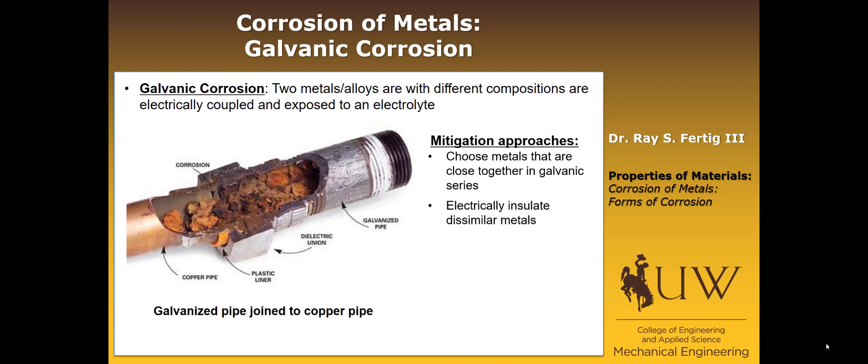We could also electrically insulate them so that they aren't able to form that galvanic couple, which is ultimately what leads to the corrosion. We could also use what's called a sacrificial anode, where we connect a third anodic material — something that is going to act as where the oxidation happens — and basically all the oxidation occurs in that material, saving the other two materials from oxidizing.